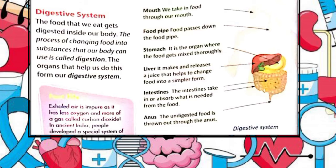Then the small intestine starts working. It is a long tube about 1.5 to 2 inches (3.5 to 5 centimeters) around, packed inside beneath your stomach. If you stretched out an adult's small intestine, it would be about 22 feet (6 to 7 meters) long. The small intestine breaks down the food mixture further so your body can absorb all the vitamins, minerals, proteins, carbohydrates and fat. Digestive juices sent from nearby organs help digest food and allow the body to absorb nutrition.